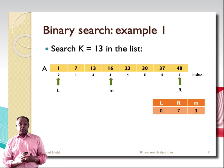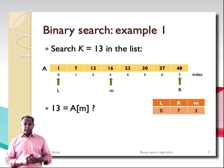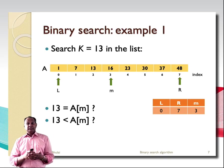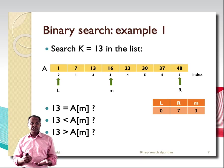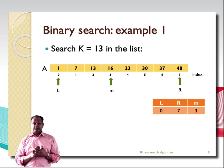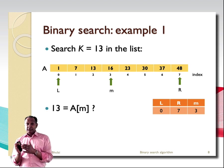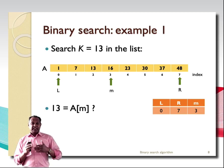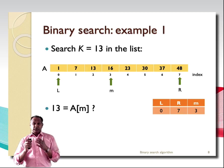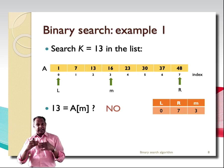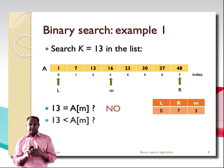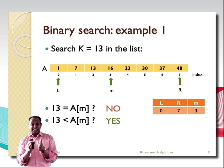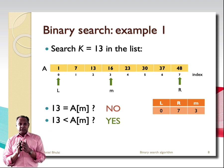Now we can have three cases. First, is 13 equal to the element at position M? M is 3, and the element at position 3 is 16. So 13 is not equal to 16. Second, is 13 less than the element at position M? Yes — 13 is less than 16. So 13 must be in the left half of the list. Since the list is sorted, all elements to the left of the middle are less than it, so we can eliminate the right half.